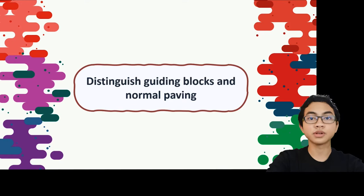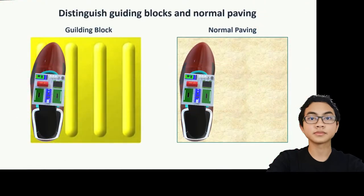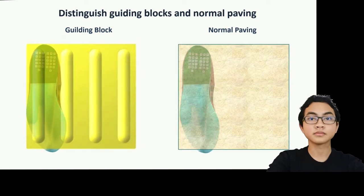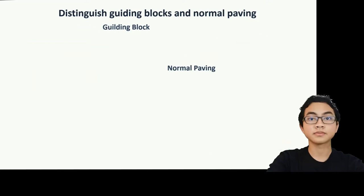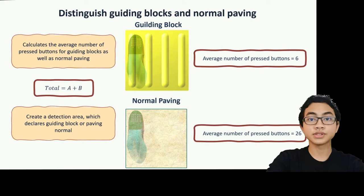How do we differentiate between normal paving and the guiding block? If we step on the surface of the guiding block and on normal paving, we can see that these two types of paving have a clear difference. The guiding block has a prominent pattern while normal paving has a flat surface. This affects the number of buttons pressed on the bottom of the shoe. After data collection, if we step on the guiding block, the average number of buttons pressed is 6, while for normal flat paving the average number of buttons pressed is 26.